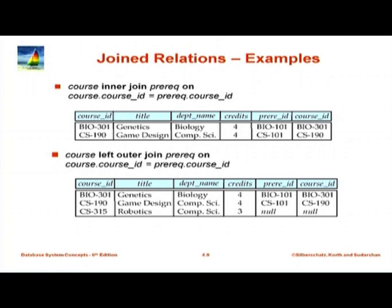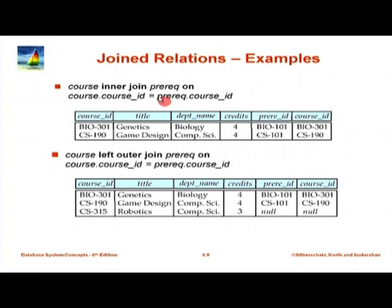Here are some other examples of a join, but this time not using natural join. Since we are not doing natural join, columns with the same name from both sides are present — in this table course ID appears twice. The query is: course inner join prereq on course.course_id equal to prereq.course_id. We have course ID, title, department name, credits, prereq ID, and course ID from prereq. We could prefix them as course.course_id and prereq.course_id. This inner join is the usual join we have seen, written using the inner join on condition syntax.